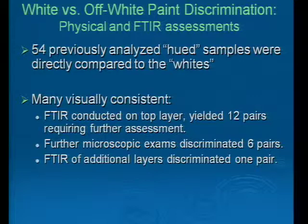Performing microscopic exams on those 12 pairs discriminated six more. Performing FTIR analysis on additional layers discriminated an additional pair. So of those 54 samples that had to go back and be compared to the whites, five pairs remained.